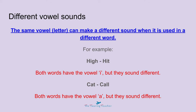Now we should all know what the different vowels are: A, E, I, O, U and sometimes Y. But what is a vowel sound? The same vowel or letter can make a different sound when it is used in a different word. For example, 'hi' and 'hit' — both words have the vowel I but they sound different.